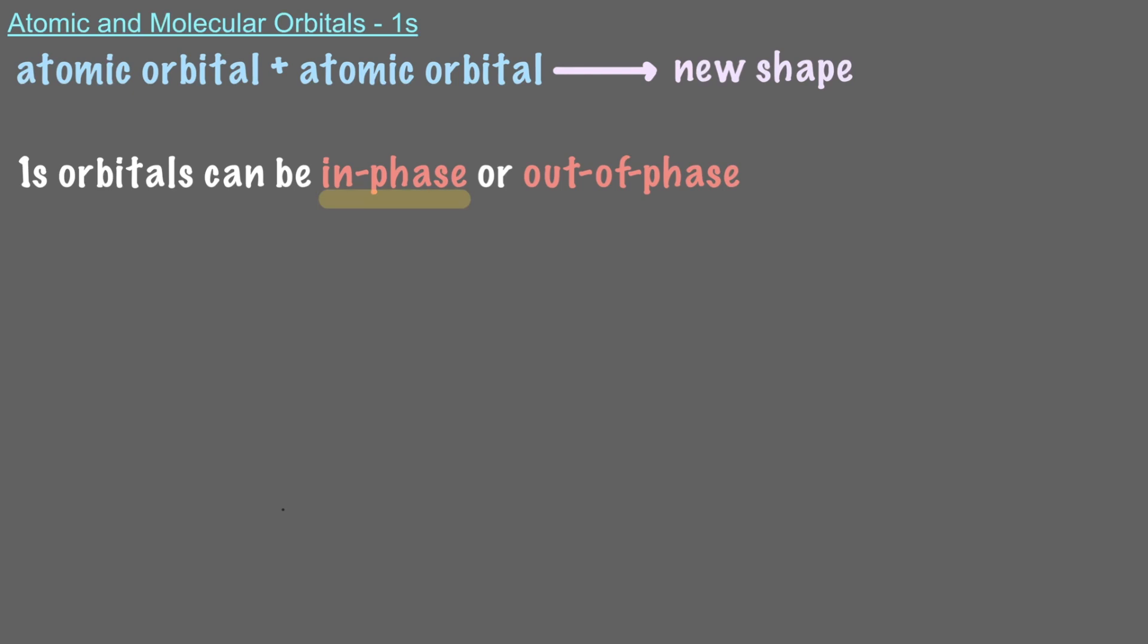When the two atoms are very far apart, the 1s orbitals do not interfere with each other. But what happens as we bring them closer together? At a certain distance, the two orbitals start to overlap.